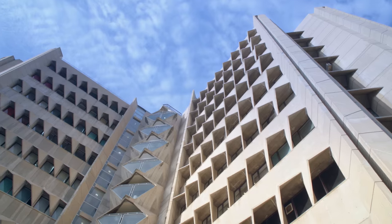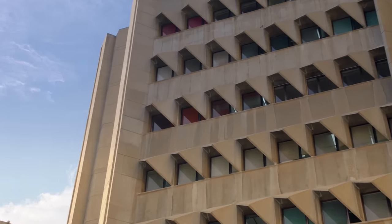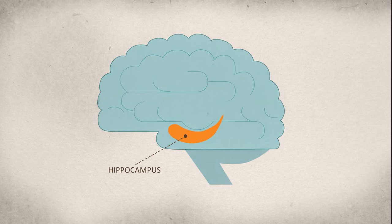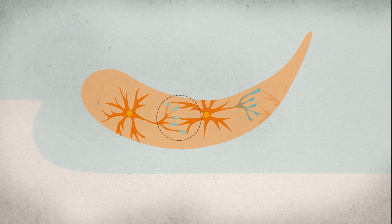My laboratory is studying the mechanisms underlying stability and plasticity of neural circuits. Specifically, we focus on a part of the brain called hippocampus, which is important for episodic memory of everyday facts and spatial memory.